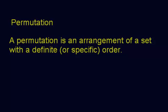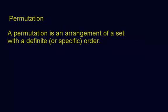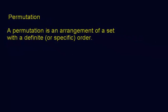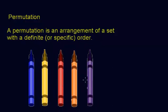So permutation, it is an arrangement of a set with a definite or specific order. So an example of something with a set, let me go get you something that has a set here. Okay, so here we go. We have crayons, we have five crayons, each one a different color in a specific order.